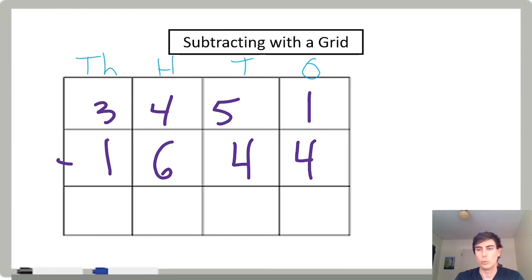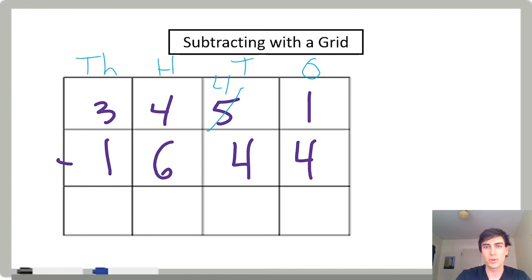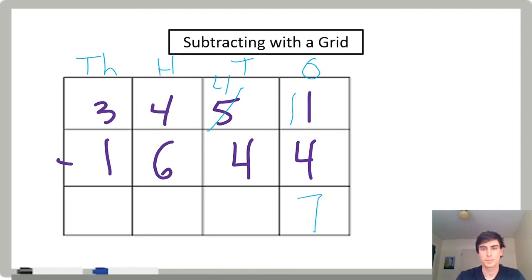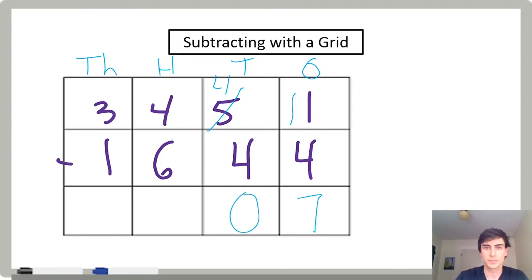1 minus 4 — I can't do that, I've got to borrow. I'm going to go to my tens. I'm going to take one 10 and turn it into 10 ones. Put together with this one one, that gives me 11 ones. 11 minus 4 is 7. 4 tens minus 4 tens is zero. 4 hundreds minus 6 hundreds — I can't do that, I have to borrow.